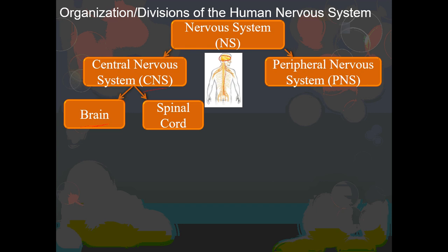The peripheral nervous system is a little bit more complicated. Central means down the middle; periphery means away from the central part. So anything outside of the brain and the spinal cord is considered the peripheral nervous system, or the PNS.